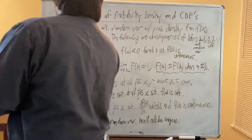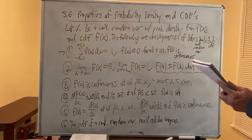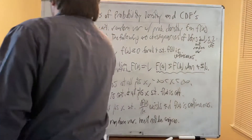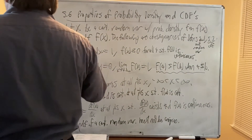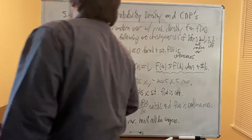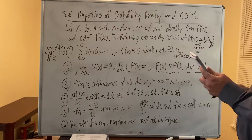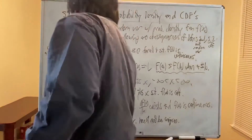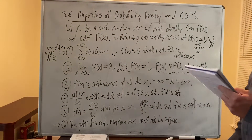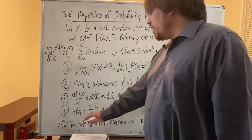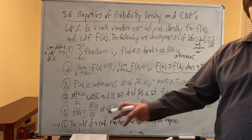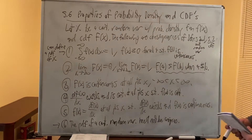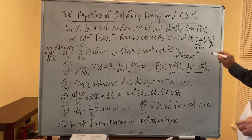Property 1 can serve as the definition of a probability density function. And by property 6, since the PDF is not unique, we say 'a PDF' rather than 'the PDF.' These are six consequences of the definitions of a continuous random variable and the CDF.